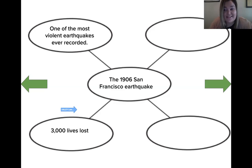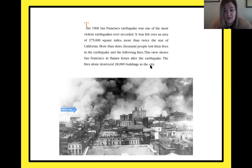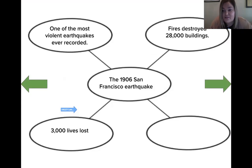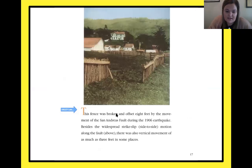We've got to keep going back to that text for our third piece of information. It says: 'This view shows San Francisco in flames hours after the earthquake.' Nothing specifically about what the earthquake did, so I'm going to keep reading. 'The fires alone destroyed 28,000 buildings in the city.' Well, the fires were caused by the earthquake — so it is the earthquake's fault that we had that many fires. We're going to put that in our web too: the fires destroyed 28,000 buildings. That's a big deal.